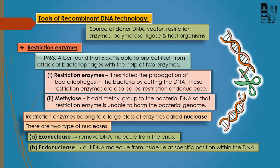Now coming to restriction enzyme — first, the discovery. In 1963, a scientist by the name of Arber isolated two types of enzymes from E. coli which helped to protect it from the attack of bacteriophage. Bacteriophage is a virus which can infect bacteria. One of the enzymes is known as restriction endonuclease, and this enzyme can cut the DNA at a specific location, thus restricting the growth and division of the bacteriophage.